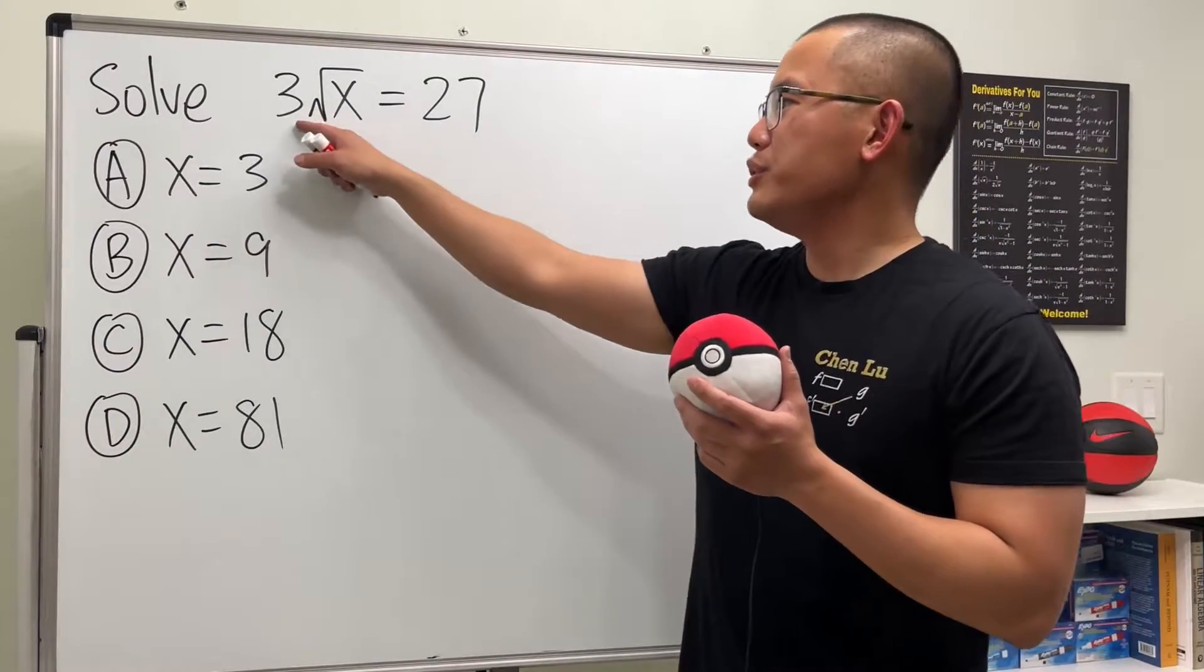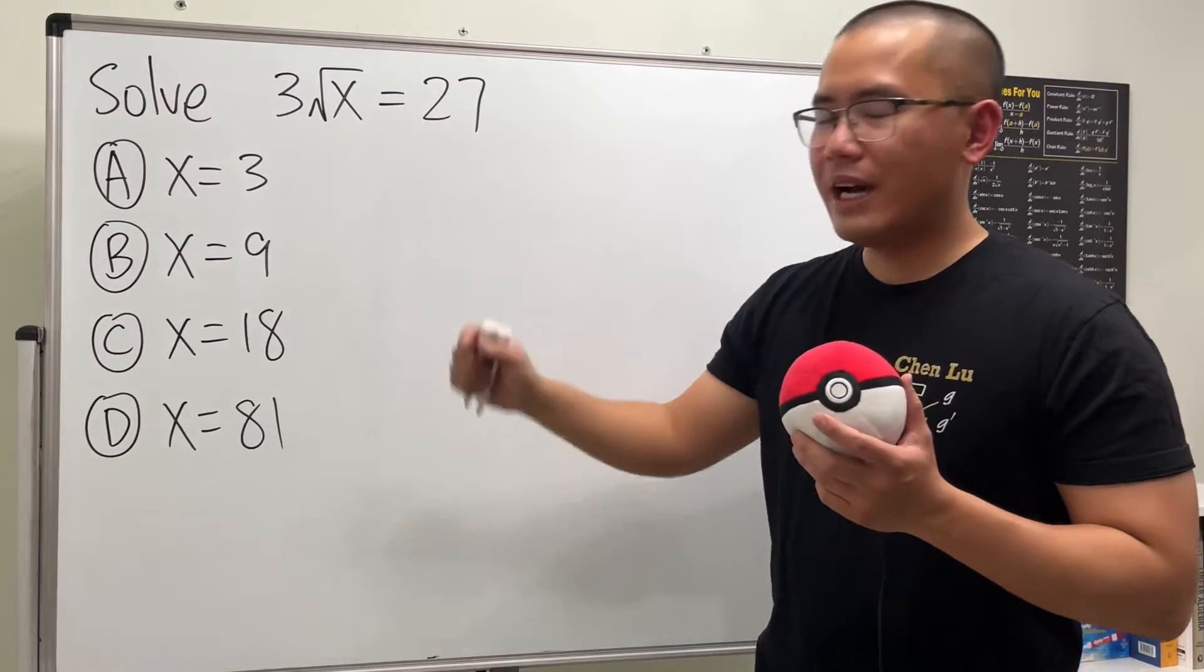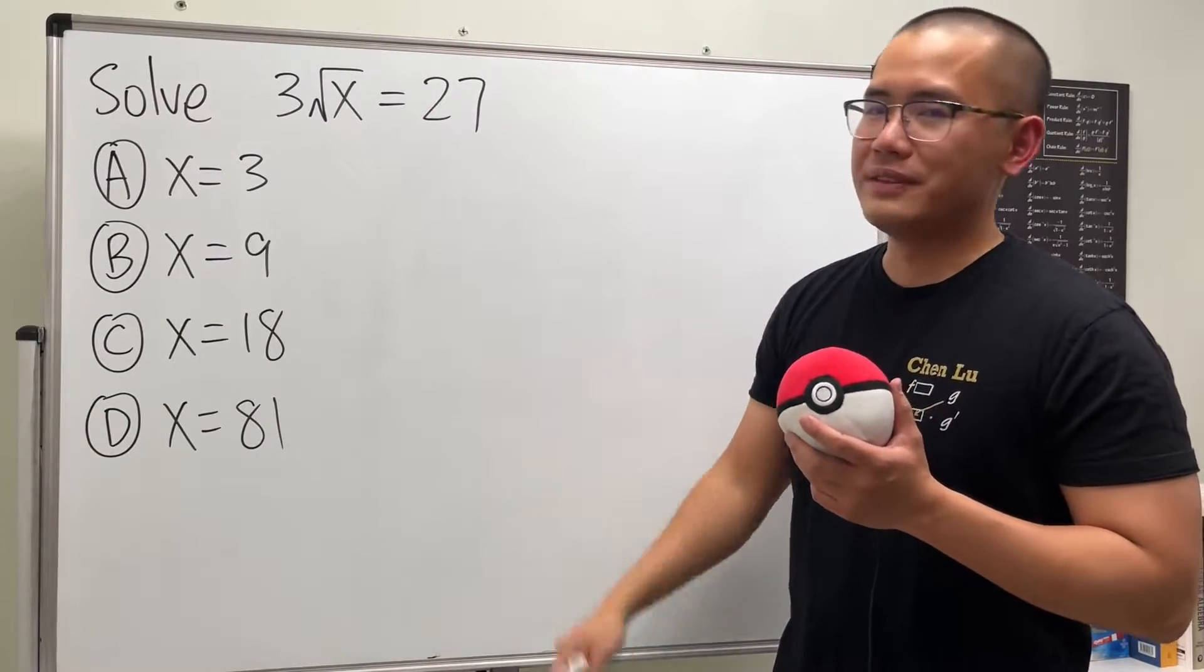Okay, we're going to solve this equation. 3 times square root of x is equal to 27. And again, here we have the answer choices. Go ahead and pause the video and try this first.